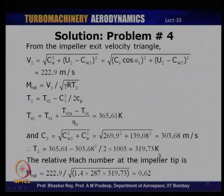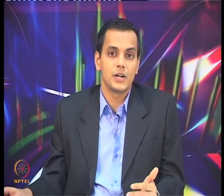The relative Mach number at the impeller tip is 0.62. This completes the four tutorial problems: Problem 1 involved solving the velocity triangle for mass flow and blade angle; Problem 2 calculated slip factor with pre-whirl; Problem 3 calculated absolute Mach number; and Problem 4 combined slip factor calculation with relative Mach number for backward-leaning blades.